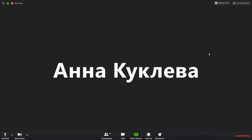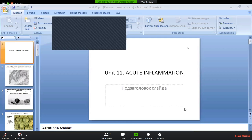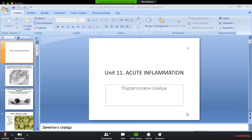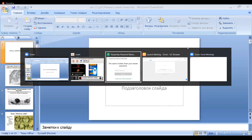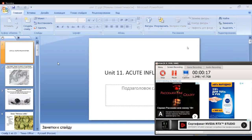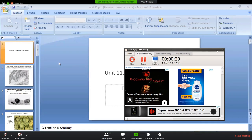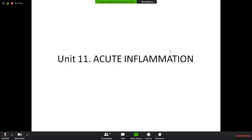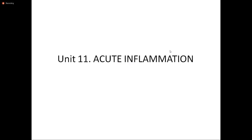Various exogenous and endogenous stimuli can cause inflammation, including hypoxia, physical agents, chemical agents, and infectious agents, immunological reactions, genetic disarrangements, and nutritional imbalances. These are causes of acute inflammation.